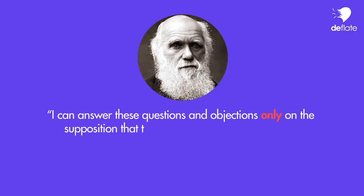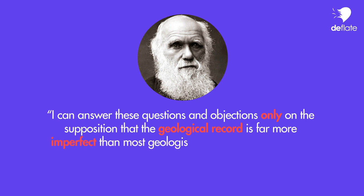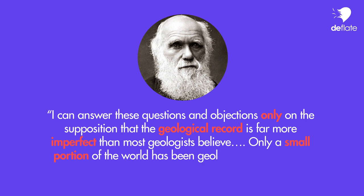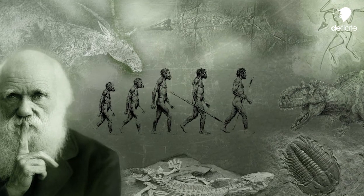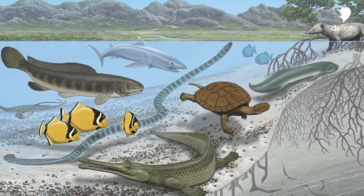And what was Darwin's response? "I can answer these questions and objections only on the supposition that the geological record is far more imperfect than most geologists believe. Only a small portion of the world has been geologically explored." So Darwin asserted that paleontologists simply hadn't unearthed yet the interminable number of intermediate forms his theory predicted to exist, hoping that the future of paleontology would change that and vindicate him. In other words, he was essentially making an argument from silence — explaining away the absence of evidence instead of explaining the fact of new animal forms showing up suddenly and abruptly in the fossil record.